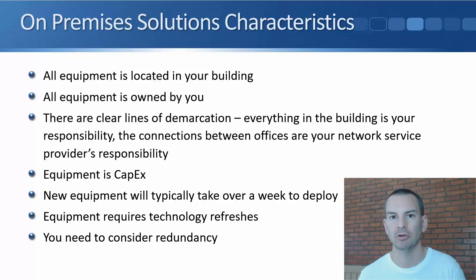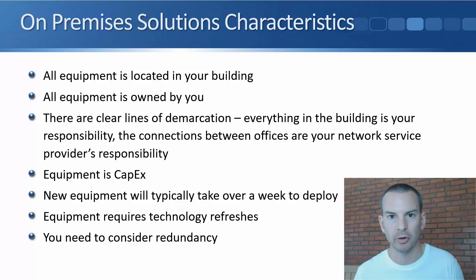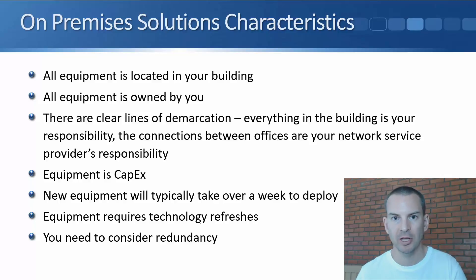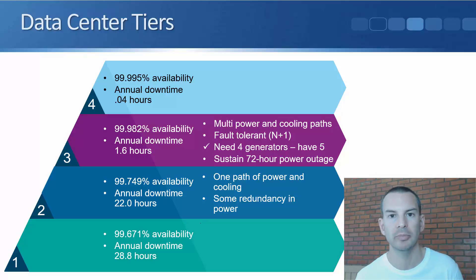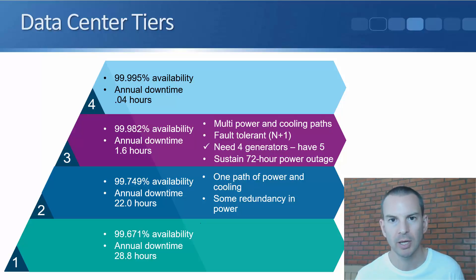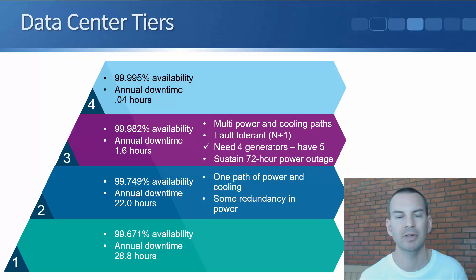You're also going to want to consider redundancy. If you're running mission-critical applications — things that are really important for your business to function — you're going to want to make sure they're always available and eliminate any single points of failure, so if one piece of equipment fails there's another one ready as a backup. For mission-critical applications you'll want high availability and a hardened facility. There are actual standards for how available our data centers are, and the higher the tier number, the more highly available the data center will be.